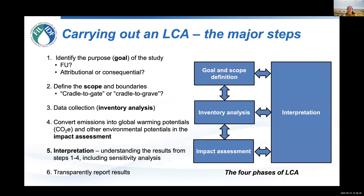When we carry out an LCA, there are four major steps: the goal and scope definition, the inventory analysis, the impact assessment, and then overall there's the interpretation, which occurs at every stage. The first bit is to look at the purpose or the goal of the study — what do we want to look at, what is important for this study — and we need to look at the functional unit and whether it's an attributional or a consequential LCA.